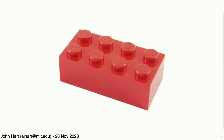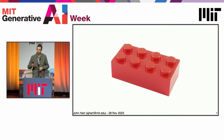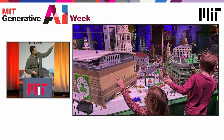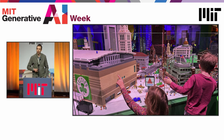I'd like you to think about how you would encode the instructions to manufacture just one Lego — not just the geometry, but the tooling and the information required to achieve the precision and tolerances that allow something as simple as a Lego to fit together so precisely. And then the creativity and breadth of components required to put together models like a Lego of the city of Boston.